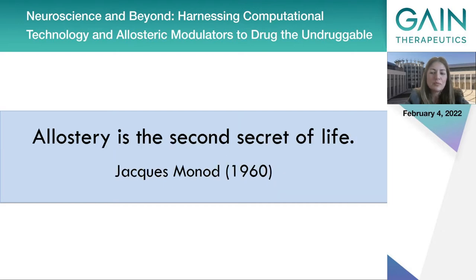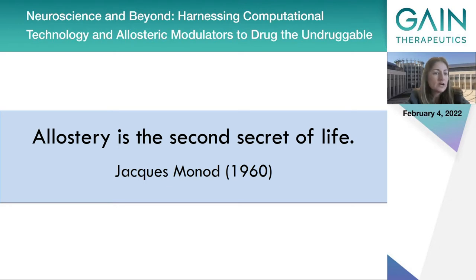The answer is a phenomenon first observed in 1904 by Bohr in hemoglobin, termed allostery, which in Greek means a different site. We now know that enzymes are not only regulated simply by their active or orthosteric sites, but also by other secondary sites that we have not yet discovered, or at least not for all proteins. That is why allostery has been termed the second secret of life.